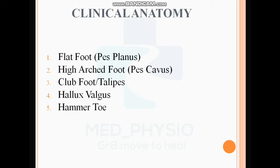Regarding clinical anatomy, there are five types of deformities we are going to discuss. First is flat foot, that is pes planus. Second is high arch foot, that is pes cavus. Third is club foot. Fourth is hallux valgus and hammer toe. I am trying to cover all three regions of the foot: hind foot, mid foot, and forefoot.